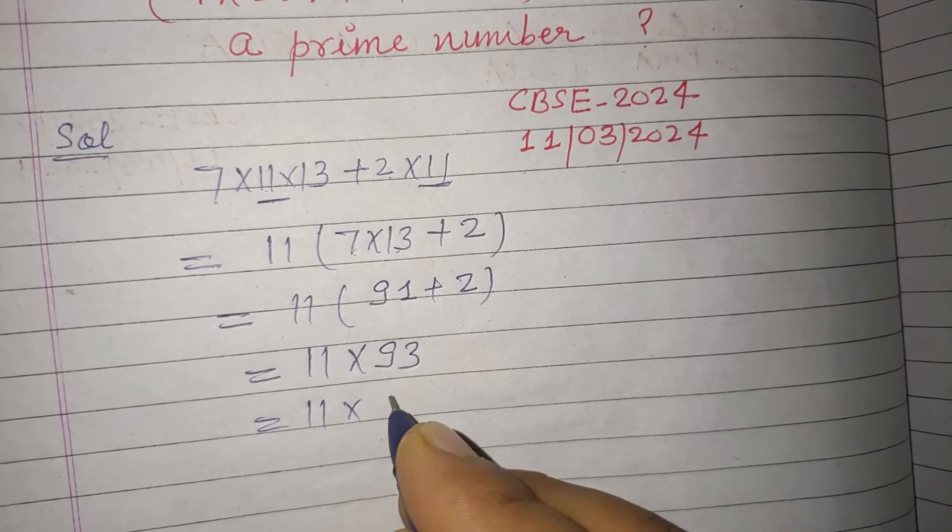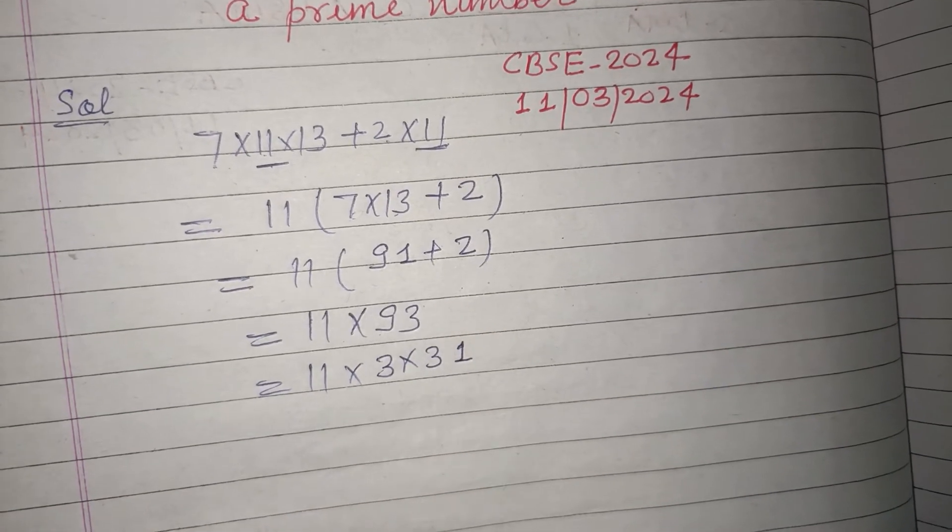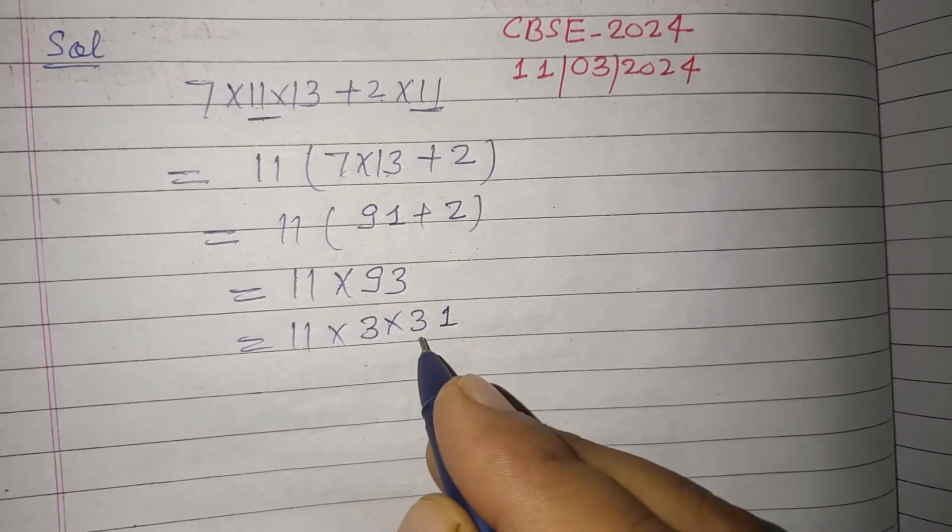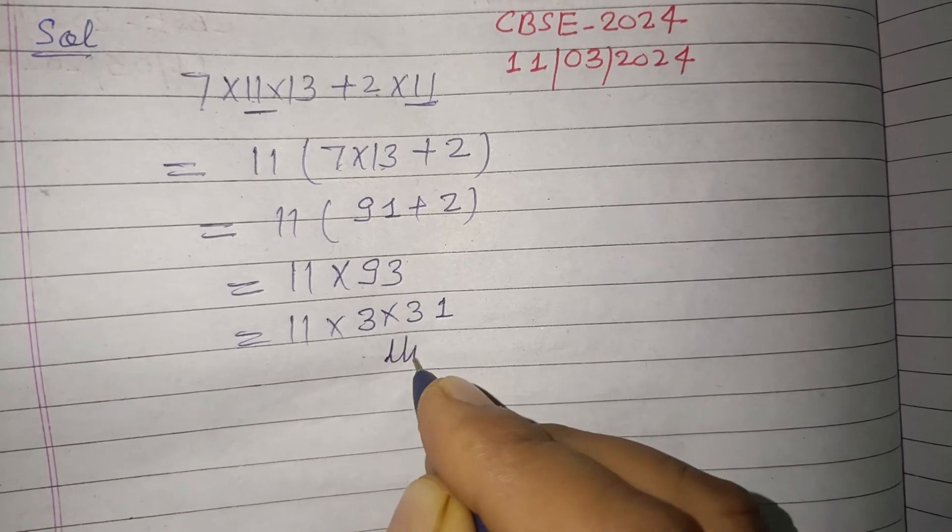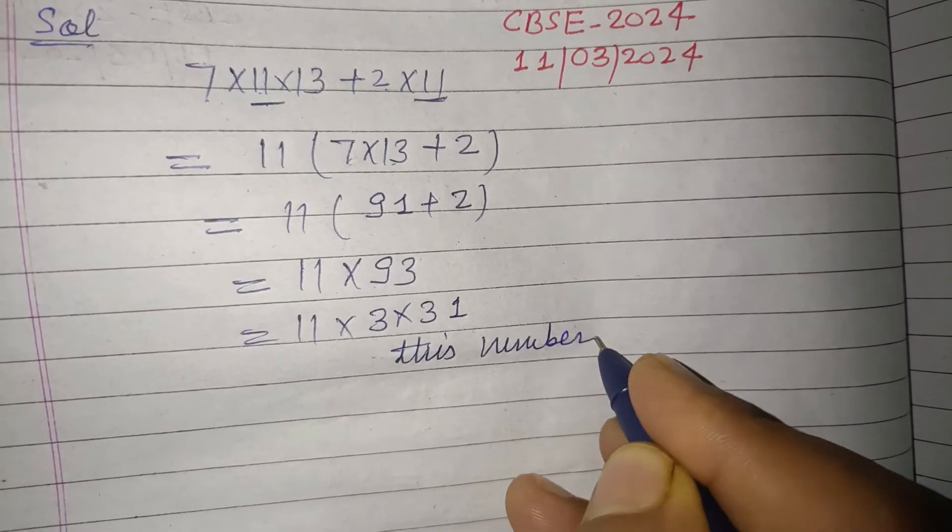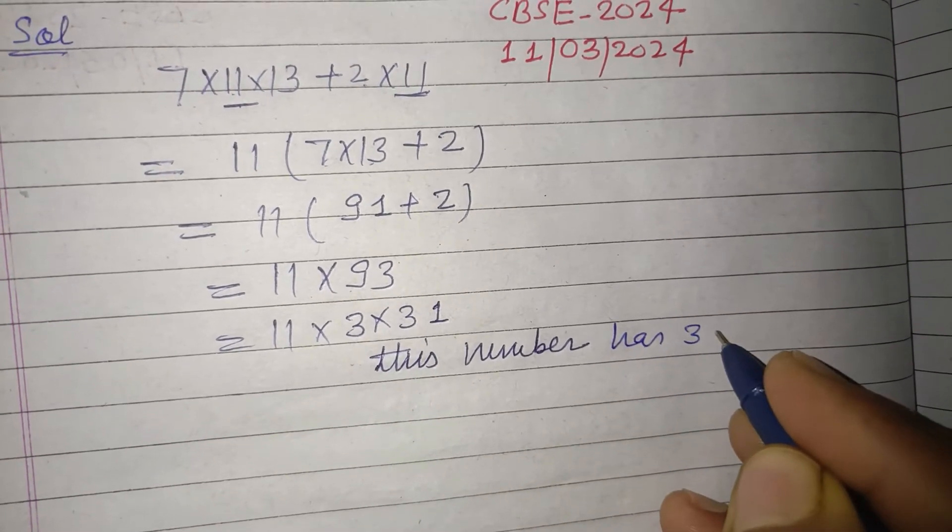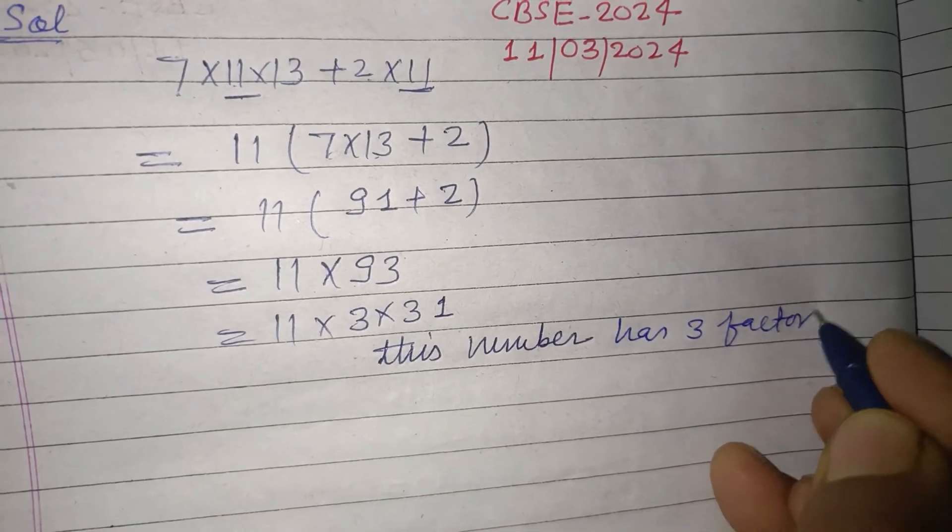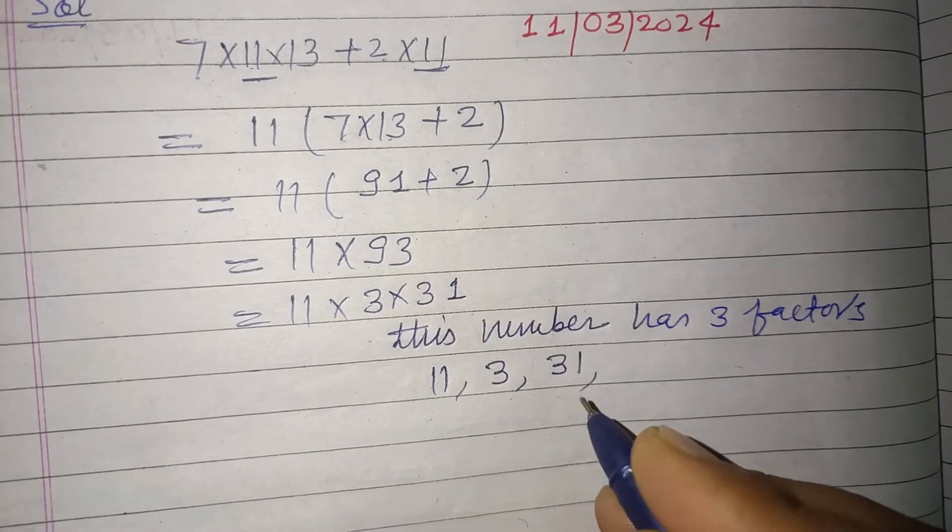And we can factor 93 as 3×31. So students, this number has three factors when we multiply it. This number has three factors: 11, 3, and 31.